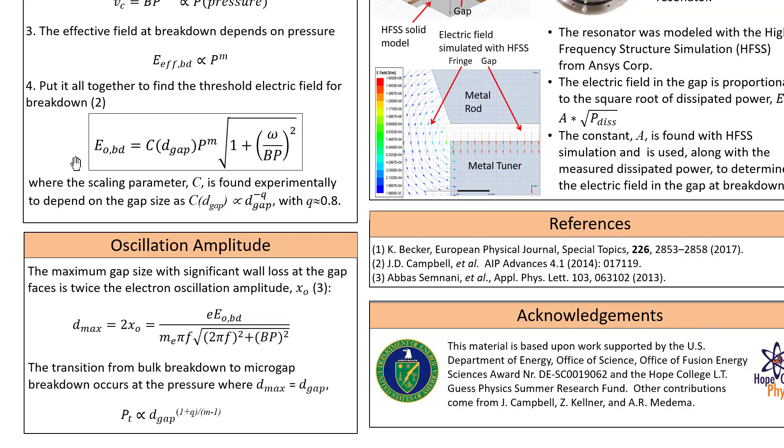If we put all that together, the threshold electric field expression and the hypothesis that when the electrons have an oscillation range which exceeds the size of the gap in which the electrons are oscillating...